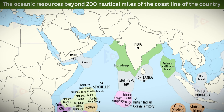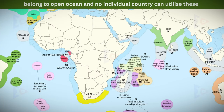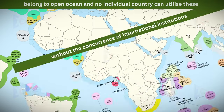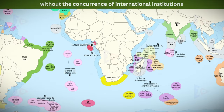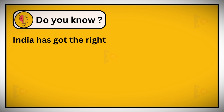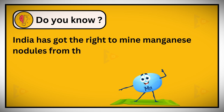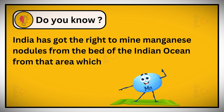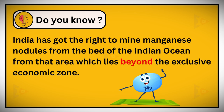International resources: there are international institutions which regulate some resources. The oceanic resources beyond 200 nautical miles cannot be utilized by any individual country without the concurrence of international institutions. India has been given the right to mine manganese nodules from the bed of the Indian Ocean from an area which lies beyond the exclusive economic zone.